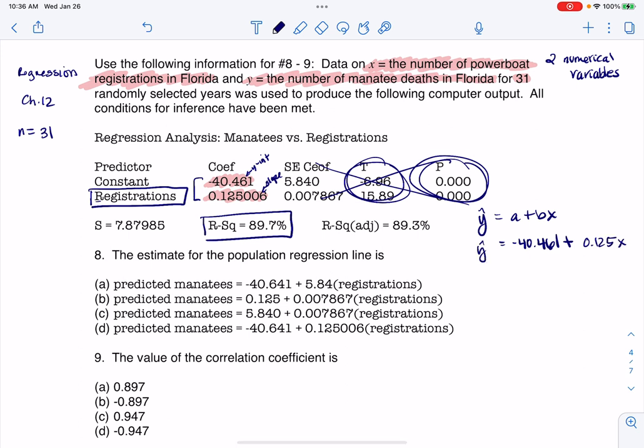Now instead of y and x, let me write my variables in context. So this is manatee deaths. I'll just put manatee deaths, which is never fun. I'm going to put this over here because I'm going to run out of room: -40.461 + 0.125. And what was x? X was the powerboat registrations.